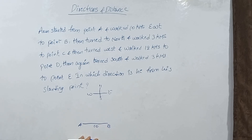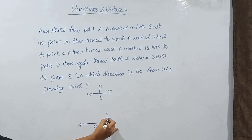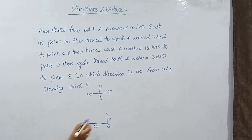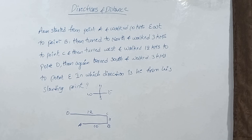Then turn north and walk 3 km to point C. Then turn and walk west towards 12 km to point D. West direction to point D. Then turn and walk south towards 3 km to point E.